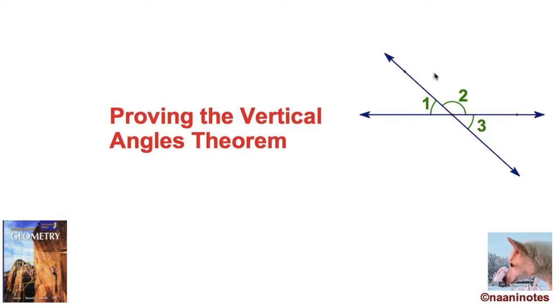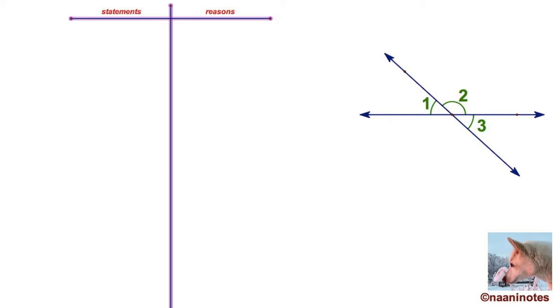Let's clean this up and put in our two column form statements and reasons. Yes, we're going to get 10 lines out of this one. I'm going to say that my first line in the proof is the diagram. That's my given because that's got everything you need.